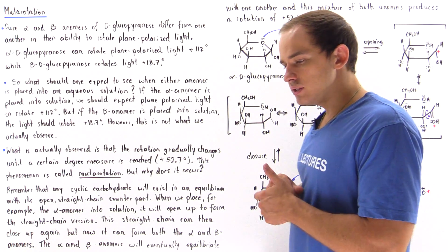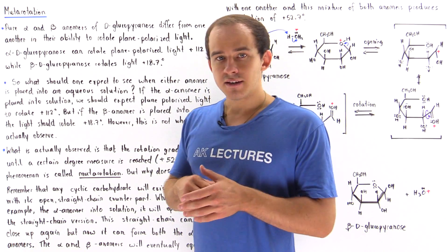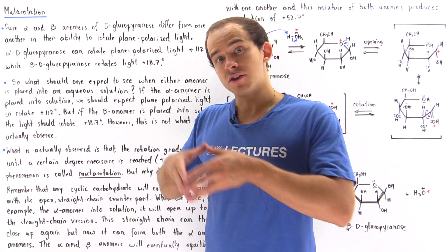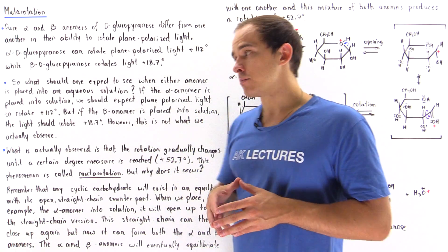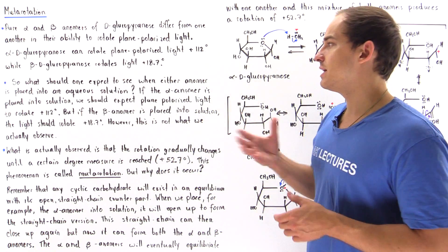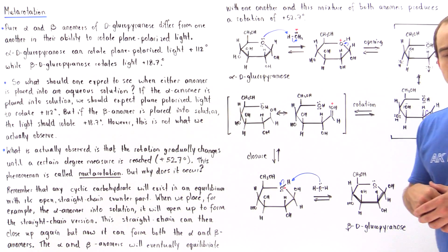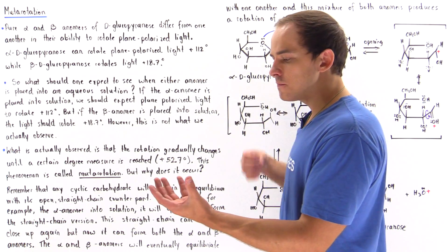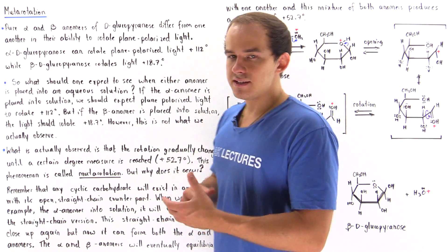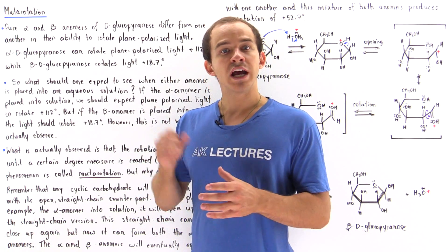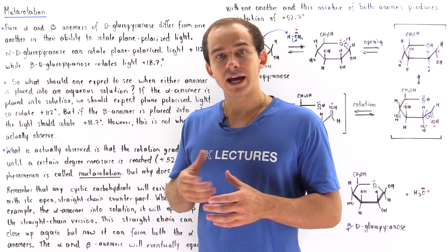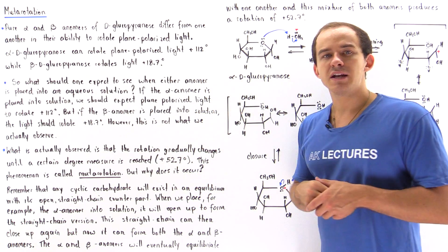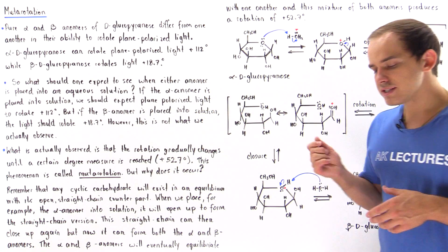What exactly will take place if we take either one of our anomers — either the alpha or the beta anomer — and place it into an aqueous solution? Let's suppose we take the alpha anomer and place it inside our aqueous solution and shine plane polarized light onto our mixture.